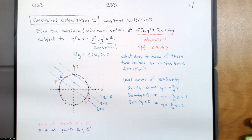So yesterday we had this problem: we want to find the maximum and minimum values of f(x,y) = 3x + 4y subject to the constraint x² + y² = 4.